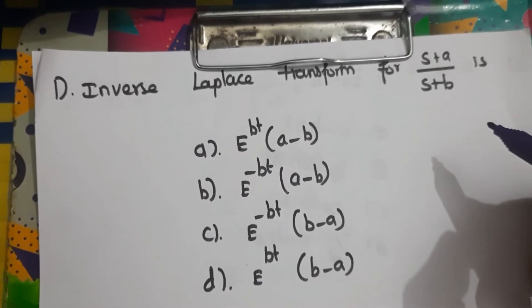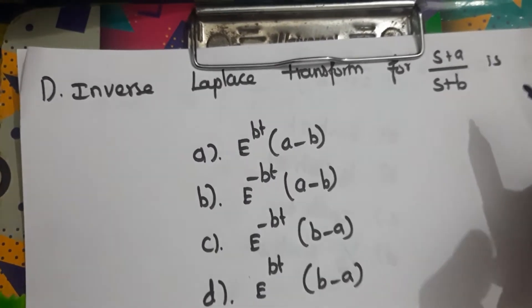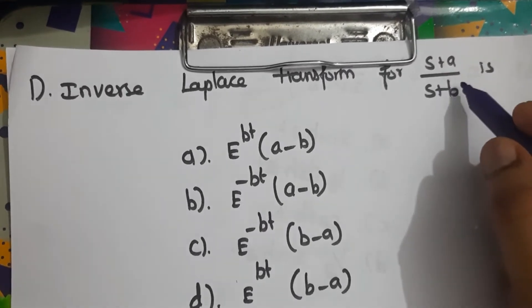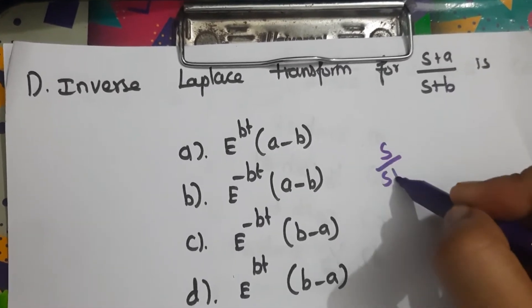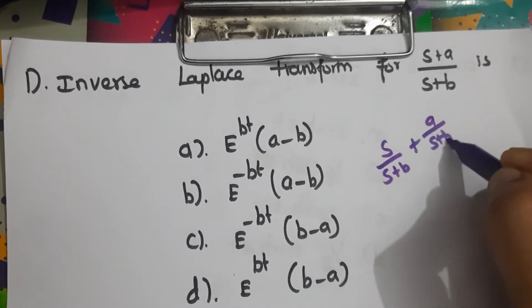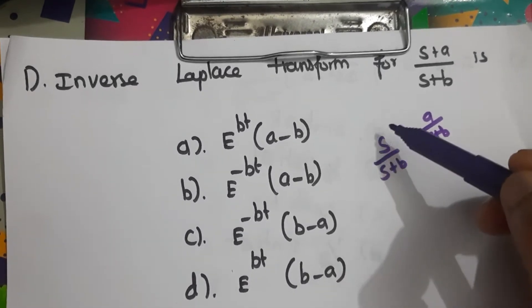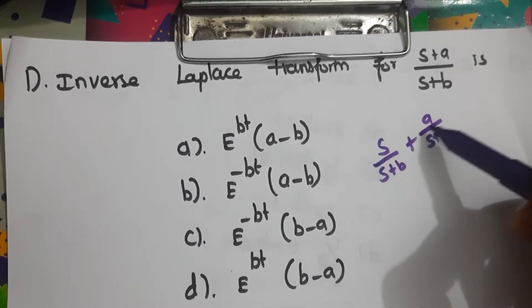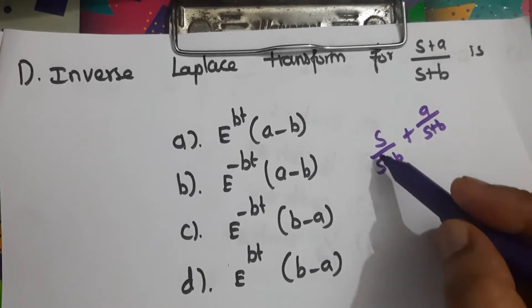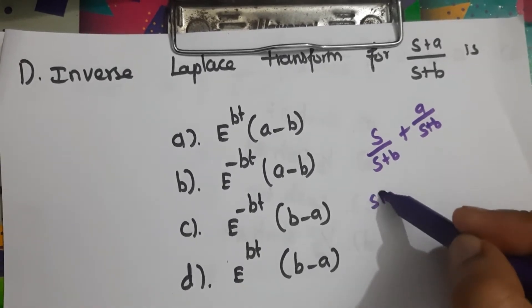First question: find the inverse Laplace transform of (s + a) divided by (s + b). We can divide this as s/(s+b) plus a/(s+b), and then take the inverse Laplace transform separately for each term.